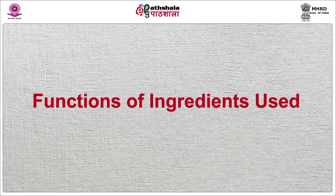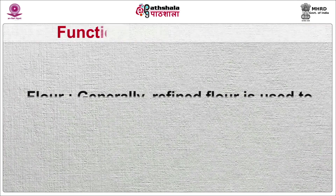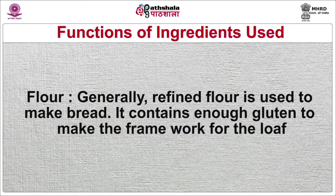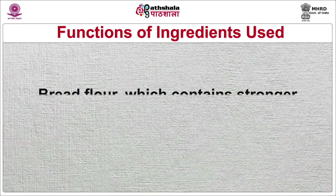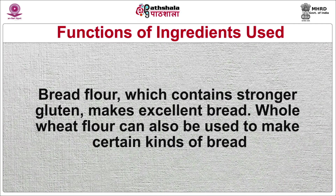Now we will discuss the functions of ingredients used. Bread is composed of various ingredients each playing a particular role and contributing to the flavor and texture of the finished product. The first ingredient is flour. Generally refined flour is used to make bread; it contains enough gluten to make the framework for the loaf. Bread flour, which contains stronger gluten, makes excellent bread. Whole wheat flour can also be used to make certain kinds of bread.